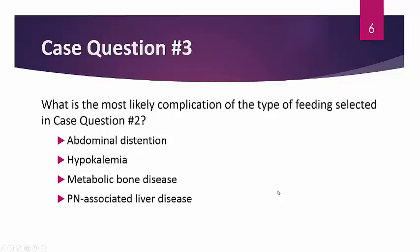As a follow-up to case question 2, which of the following is the most likely complication of the type of feeding selected: abdominal distension, hypokalemia, metabolic bone disease, or PPN-associated liver disease? After today's talk, you should be able to answer each of these questions confidently.